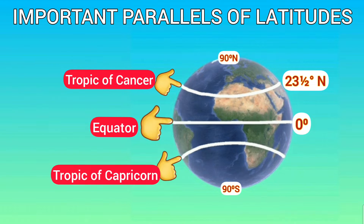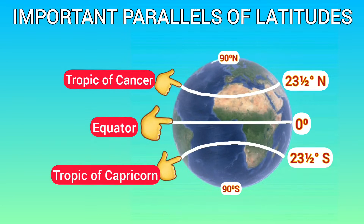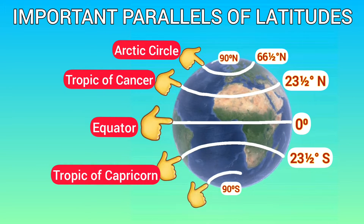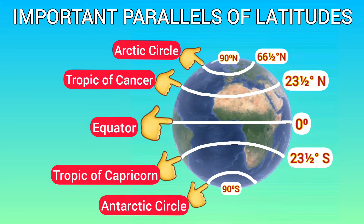The Tropic of Capricorn is in the southern hemisphere and its value is 23 and a half degrees south. The third one is the Arctic Circle, at 66 and a half degrees north of the equator, and the last one is the Antarctic Circle at 66 and a half degrees south of the equator.